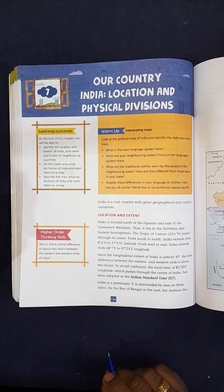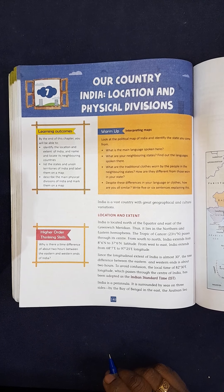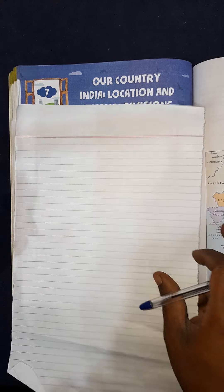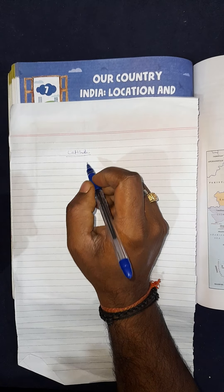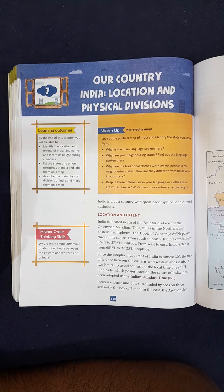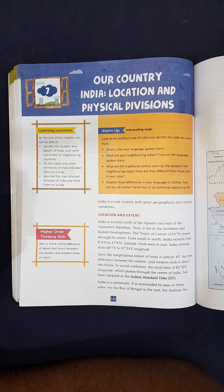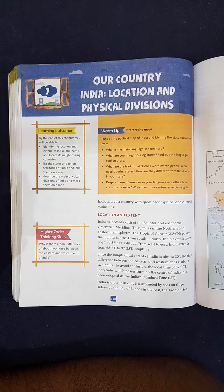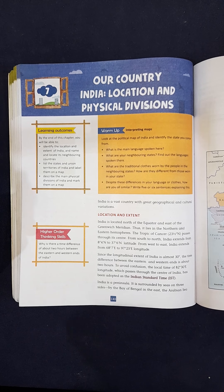In the last chapter on maps, we read that locating a place requires latitude and longitude. Latitudes are the imaginary lines drawn on a globe from east to west direction. Longitudes are the imaginary lines drawn on a globe from north pole to south pole. These lines are very helpful for locating a place on a globe or on a map.